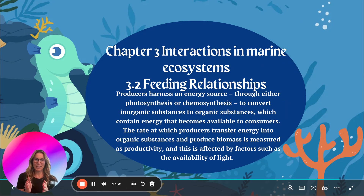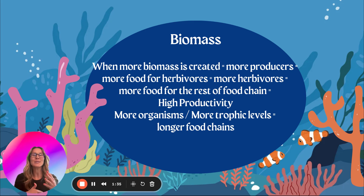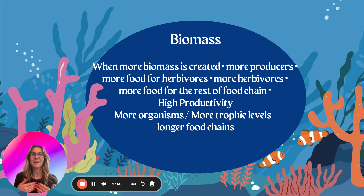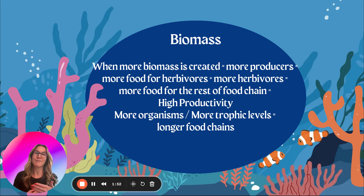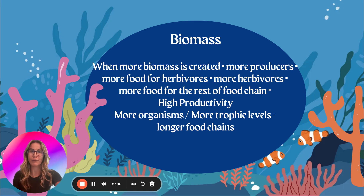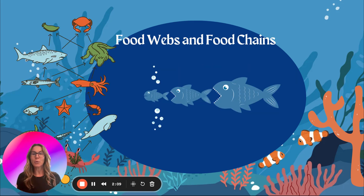Now let's look at biomass. Thanks to photosynthesis, more biomass is created because photosynthesis allows for more producers. If there are more producers, there can be more herbivores. If there are more herbivores, there can be more food for the rest of the food chain. So if there is high productivity, there will be more organisms and more trophic levels, meaning longer and broader food chains and food webs.